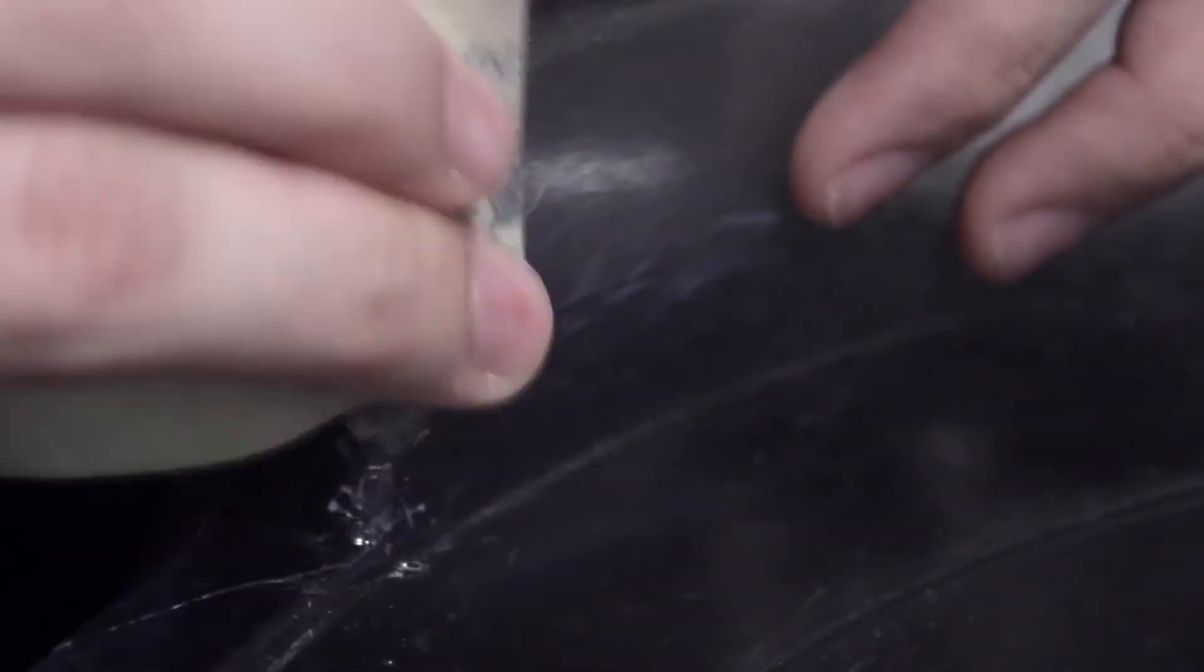And then the final grit that we move to is going to be the wet sanding, and I think this one is either 2000 grit, I'm not 100% sure. But essentially you just dip it in water and you start sanding it. It almost feels like you're buffing, and what this will do is make the whole surface smooth and shiny as opposed to being matte.